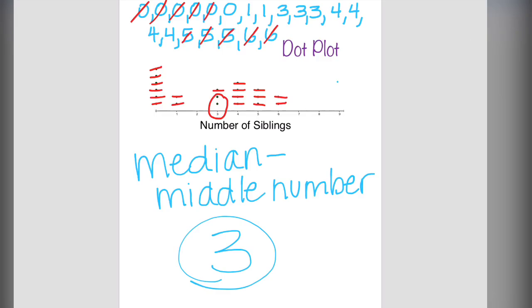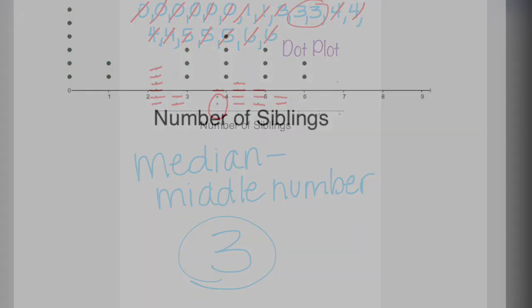Let's double check that with the actual numbers. Again I cross out a low and a high. And what's left again? Three.